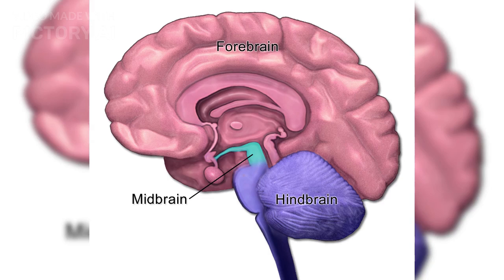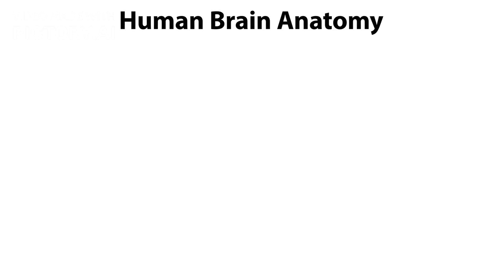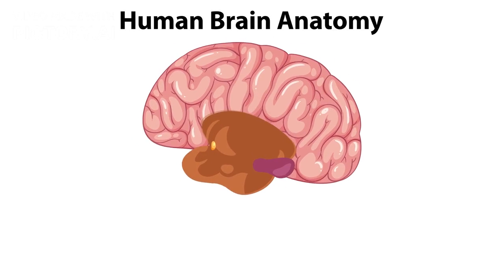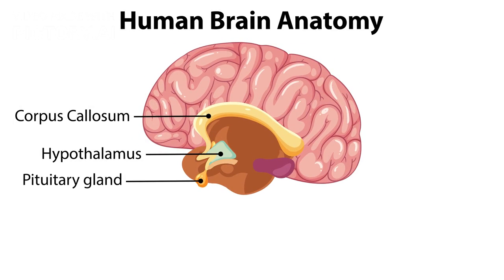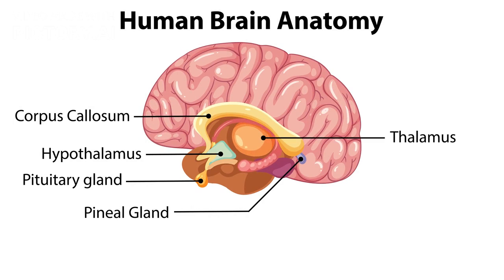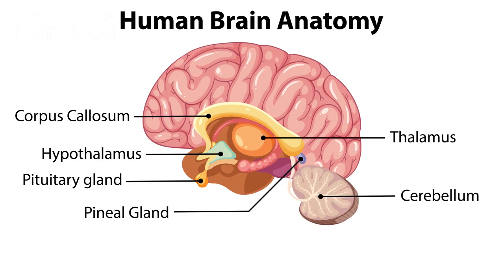The brain is divided into three major parts: the forebrain, midbrain, and hindbrain, each with distinct functions. The forebrain, the largest part, includes the cerebrum, hypothalamus, and thalamus, controlling emotions, hunger, and sleep.